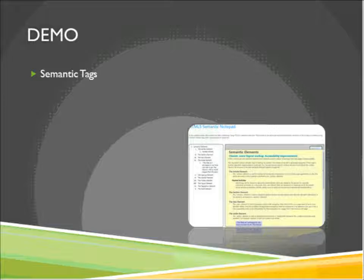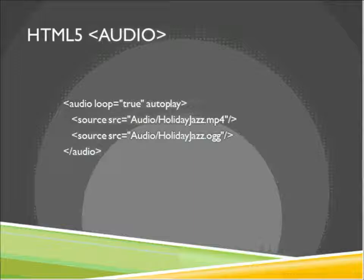Let's talk about some other tags that let us interact with our page — the audio and video tags. It's really simple to add media to our page with HTML5. We have an audio tag. In this case, the audio tag has attributes to loop the audio file and autoplay it. With HTML5, if you don't declare a Boolean value for an attribute like autoplay, it takes on its default value of true.